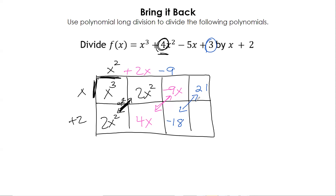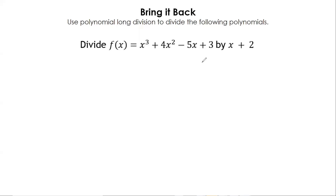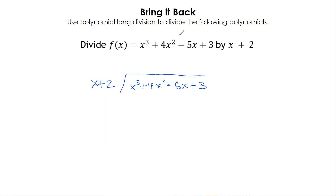Can we repeat this whole process again? No — we can't ask what times x gives me 21. This is what we call a remainder. So we're going to say plus 21 over whatever we divided by on the outside, which is x plus 2.